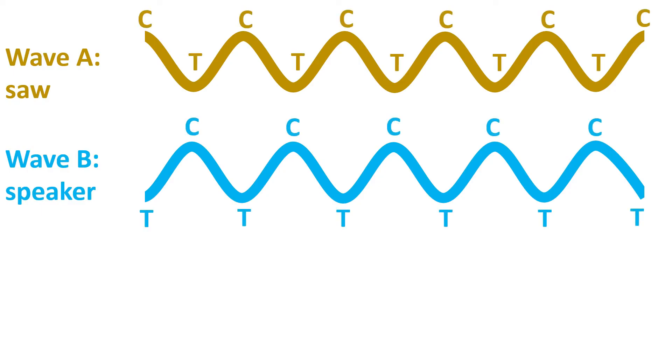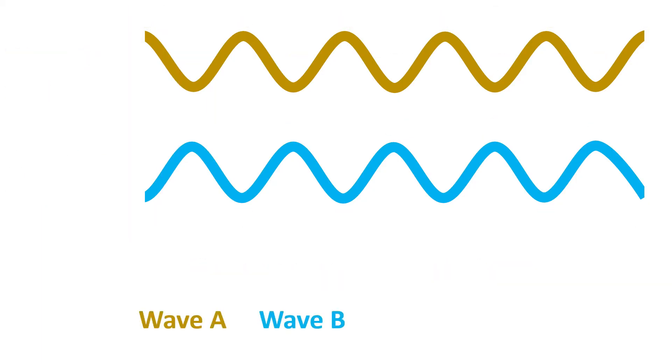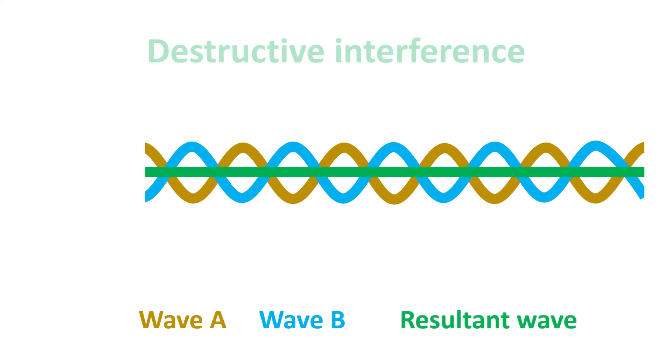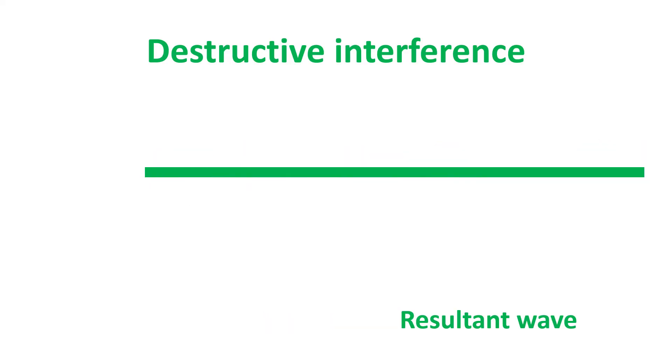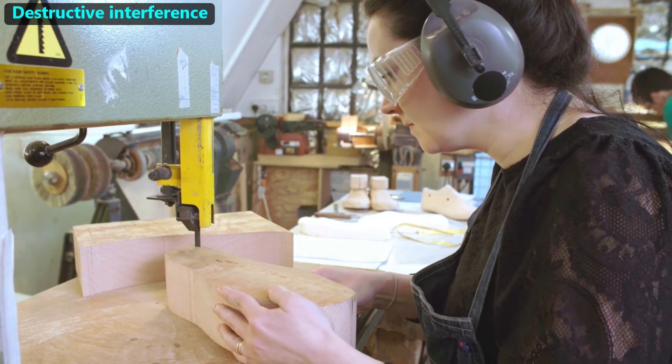Wave A is the saw's sound. Wave B represents the speaker's sound. They have the same wavelengths, but they're out of phase with each other. When these waves are in the same place at the same time, their crests and troughs cancel each other out. The resultant wave is a flat line, meaning there are no sound waves. This is destructive interference. In an ideal situation, the person wearing the headphones will not hear the saw.